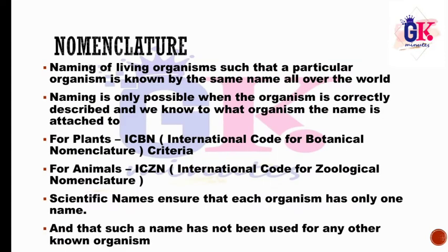The naming of living organisms ensures that a particular organism is known by the same name all over the world. One living organism has one particular name universally. Local names create confusion, so the naming is only possible when the organism is correctly described and we know to what organism the name is attached.